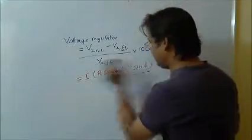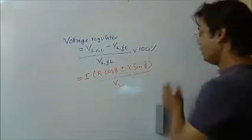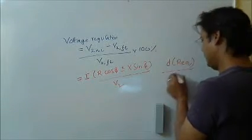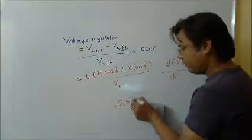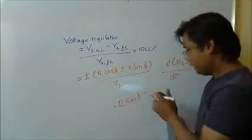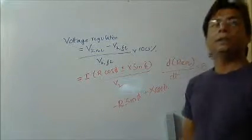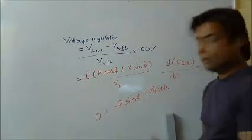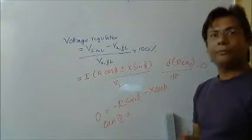If I differentiate this with regard to dφ and put it as 0, what I will get is negative R sin φ plus X cos φ equals 0. So here I will get tan φ equals X by R.